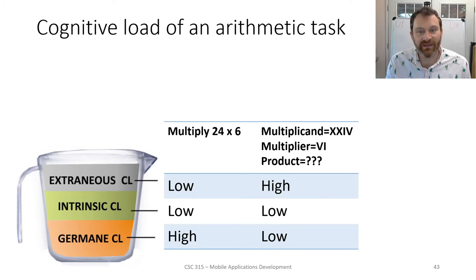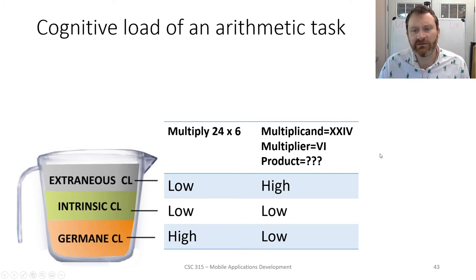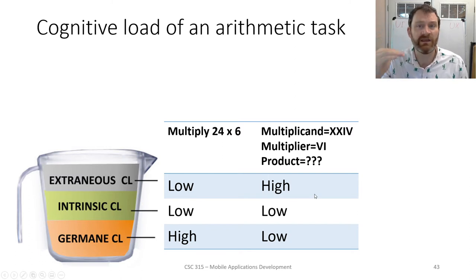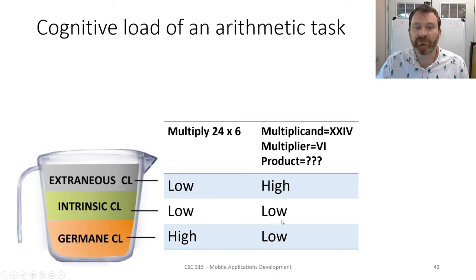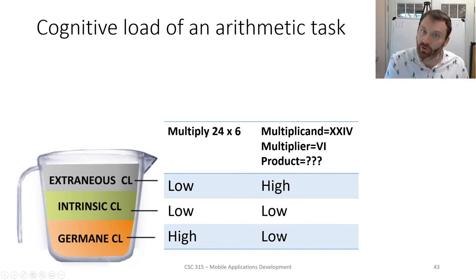Now let's flip this around. Here I'm giving you the same thing: 'Multiplicand equals XXIV, multiplier equals VI, product equals?' I am asking you to do the same thing — multiply 24 by 6 — but I've asked it in a very silly way. This is awful. The extraneous cognitive load has been raised artificially and needlessly high. It takes you more effort to understand what I'm asking than it does to actually do it. The intrinsic complexity of multiplying 24 by 6 is the same, but you have to devote more effort to understanding the problem, which reduces the effort you can spend actually solving it.